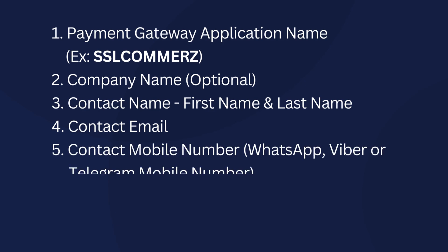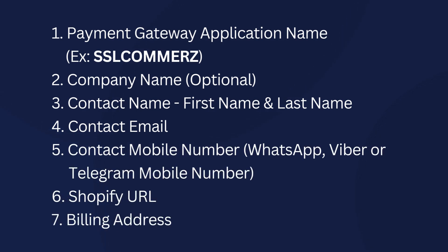Required details: one — payment gateway application name (example: SSL Commerce); two — company name (optional); three — contact name (first name and last name); four — contact email; five — contact mobile number (WhatsApp, Viber, or Telegram); six — Shopify URL; seven — billing address. Thank you for watching.